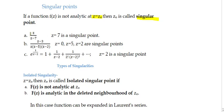For example, z divided by (z minus 7): at z equal to 7 this function is not analytic, so z equal to 7 is a singular point. Similarly for (z minus 3) divided by [z(z minus 5)(z minus 2)], putting the denominators equal to zero gives singular points. For e^(1/(z-2)), expanding gives 1 plus 1/(z-2) plus 1/(2!(z-2)²) and so on, and z equal to 2 is a singular point.